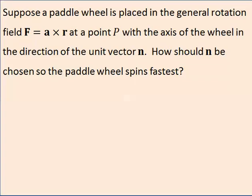Suppose a paddle wheel is placed in the general rotation field. Now, suppose the paddle wheel has its axis in the direction of, say, n. How should n be chosen? So, how should the paddle wheel, the direction of the paddle wheel be chosen so that the paddle wheel spins the fastest? Now, I'm making n be a unit vector because it makes the math a little bit easier.